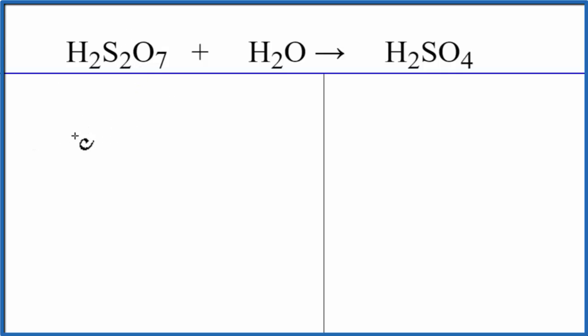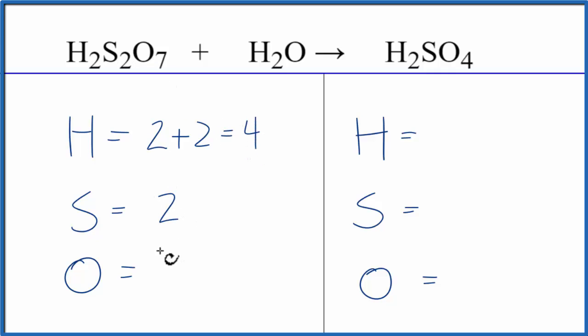Let's write down the atoms and then count them up. We have two hydrogens, and we have the two in the water, so we have four hydrogens. We have two sulfur, seven oxygens, plus this oxygen right here. That gives us eight.